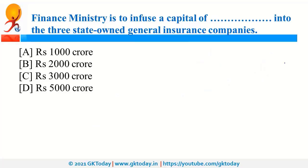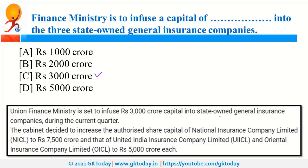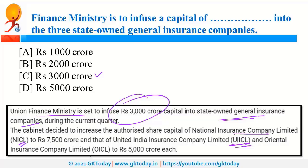The Finance Ministry announced an infusion of 3,000 crore rupees into three state-owned general insurance companies: National Insurance Company Limited (NICL), United India Insurance Company Limited (UIICL), and Oriental Insurance Company Limited (OICL). The government also decided to increase their authorised share capital — NICL's to 7,500 crore, and UIICL and OICL's to 5,000 crore rupees each.